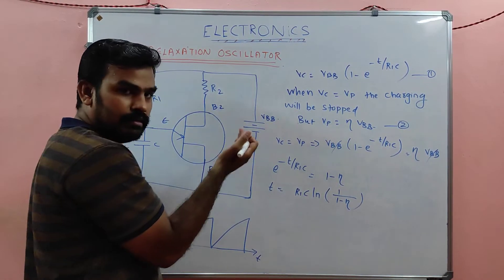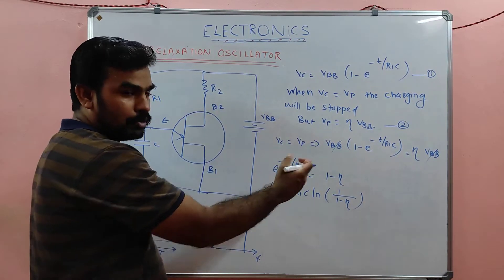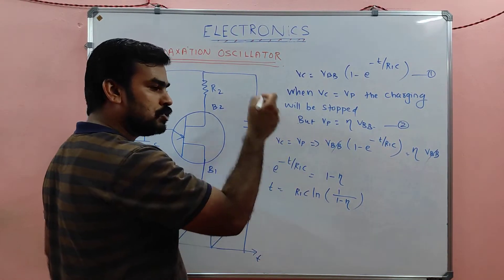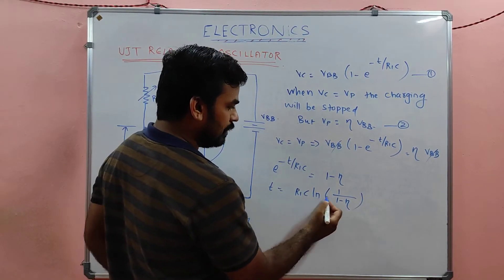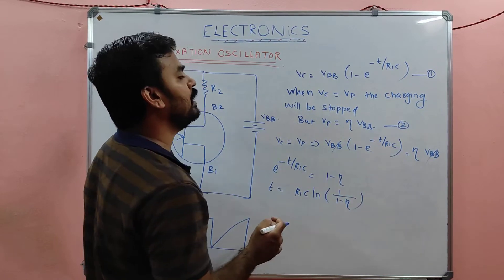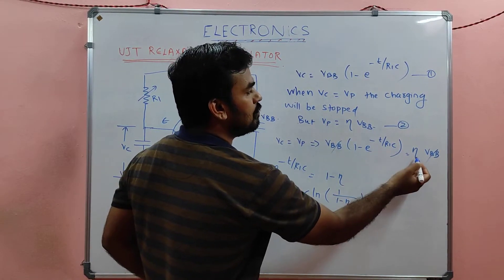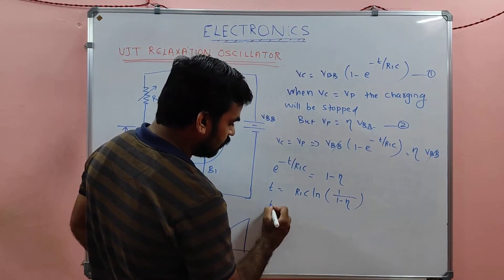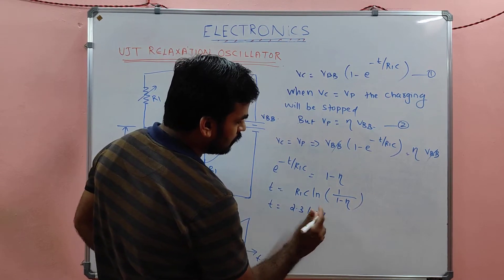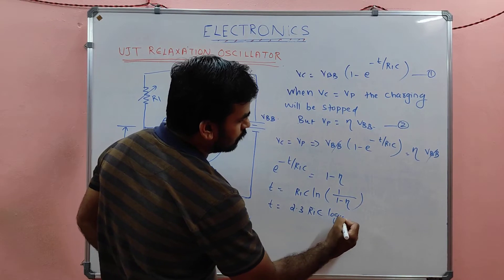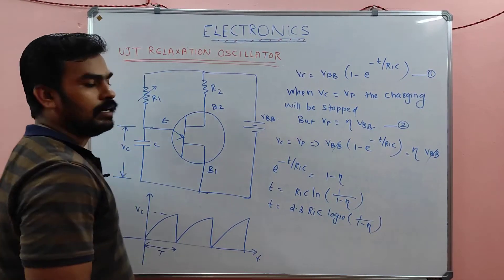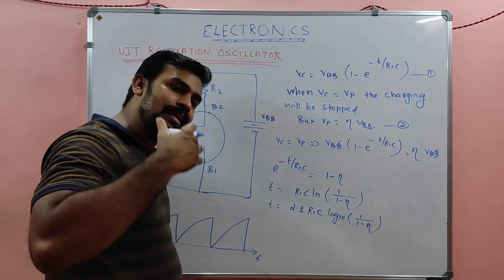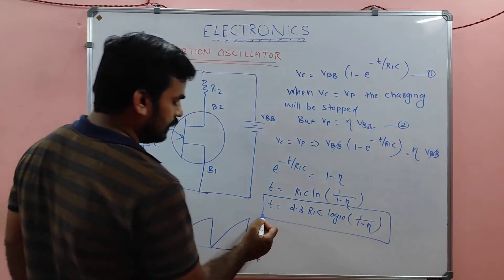Taking the natural log on both sides: ln(e^(−T/R1C)) gives −T/R1C, and ln(1/(1−η)) gives the result. So T = R1·C · ln(1/(1−η)). Converting to log base 10: T = 2.3 × R1 × C × log₁₀(1/(1−η)). The factor 2.3 converts natural log to log base 10. This is the time period equation of the oscillator.